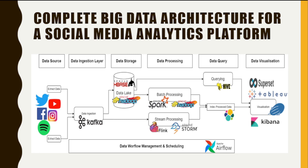For the data ingestion layer, we can use Apache Kafka as a message broker to collect data from the Twitter API. We can set up Kafka in a cluster and create a Kafka topic to store the Twitter data. For the data storage layer, we can use Apache Hadoop as a distributed file system to store Twitter data in HDFS, create tables and indexes, and store data on top of HDFS in Hadoop-based indexes.